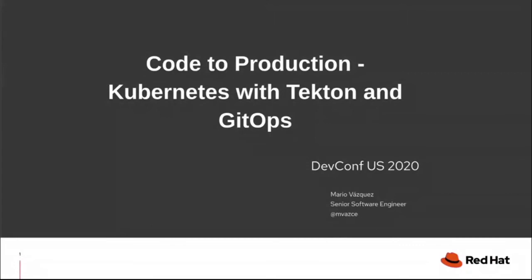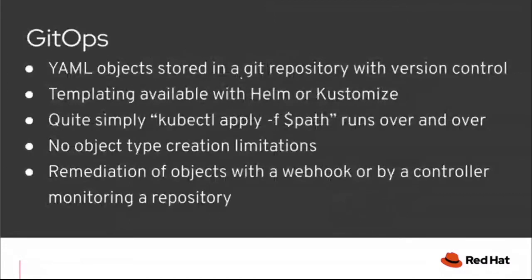Hello everyone, thank you for attending this session. My name is Mario Vazquez and today we are going to see how you can go from code to production using Kubernetes, Tekton, and GitOps. Let's start with GitOps — GitOps is a way to do Kubernetes cluster management and application delivery. It works by using Git as a single source of truth for declarative infrastructure and applications.